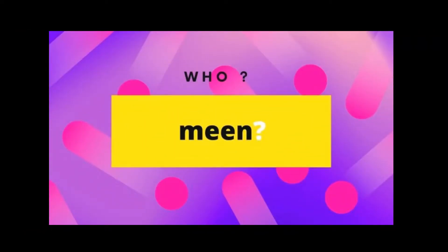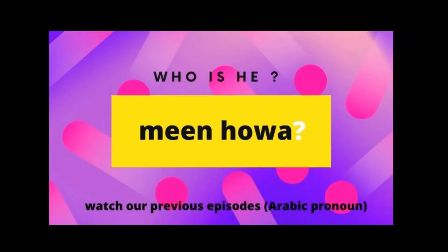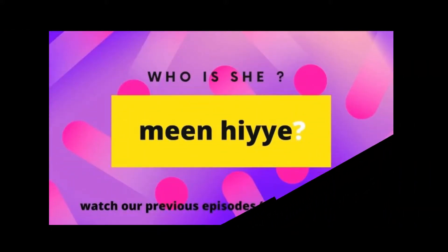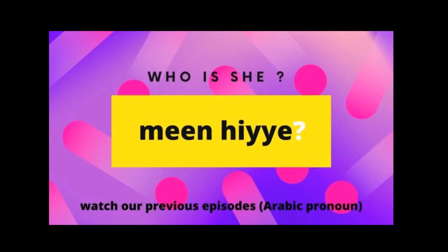The second interrogative pronoun or istifham is 'who', and in Arabic we say 'mean'. If you want to ask about anyone, you can attach to the word 'mean' any of the pronouns taught in the previous episode. If you want to say 'who is he', simply say 'mean huwa'. If you want to ask 'who is she', you say 'mean hiya'. And if you want to say 'who are you', you say 'mean inta' for masculine and 'mean inti' for feminine.